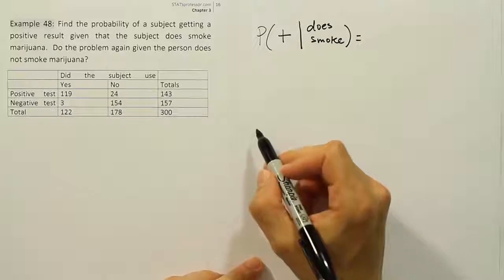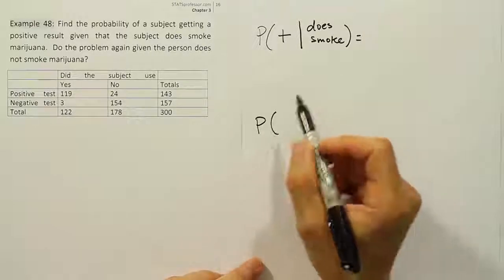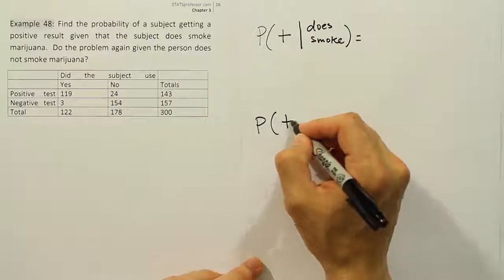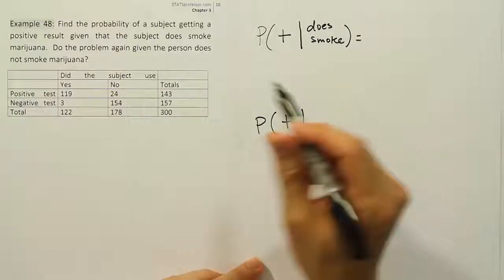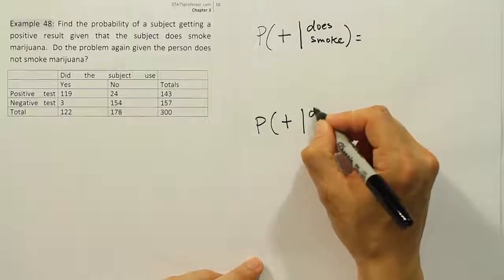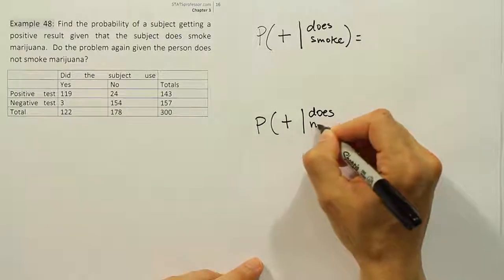And then for the second probability, we're going to write that one down. It says do the problem again. So in other words, it's a probability of a positive test result, but this time it'll be given the person does not smoke. So we're going to say 'does not smoke.'